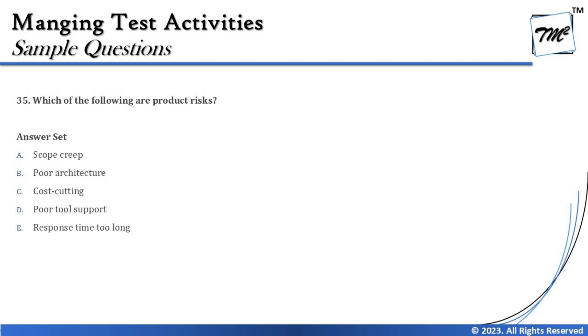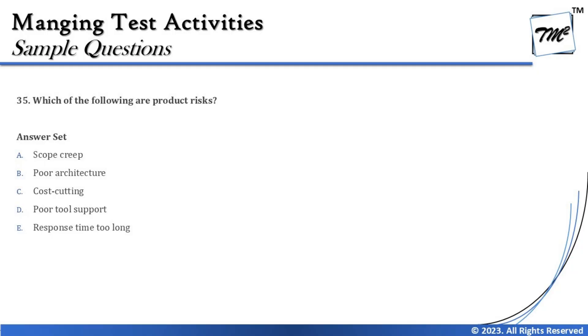The question is about product risk. Option A says scope creep — scope creep is related to project activities and certainly impacts the project. Option B says poor architecture — a poor architecture of any product would lead to incompleteness or poor performance of the application, and is directly a product attribute, thus a product risk. Option C says cost cutting — of course, a project-related activity.